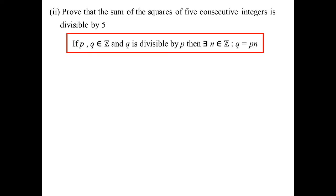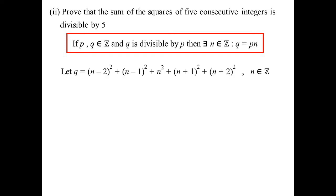Prove that the sum of the squares of 5 consecutive integers is always divisible by 5. The formal definition: if P and Q are both integers and Q is divisible by P, then there must exist an integer N such that Q equals P times N. For 5 consecutive integers, I've decided to make the middle one N, then have N−2, N−1, N+1, N+2. The advantage is that when we square these out, the cross terms cancel — the first two give minus 2AB and the last two give plus 2AB.